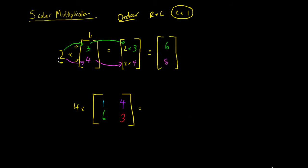So what you can see is everything just gets scaled up by a factor of 2. So 3 times 2 is 6, and 4 times 2 is 8. The order stays the same — we just scale everything up by this scalar number here.